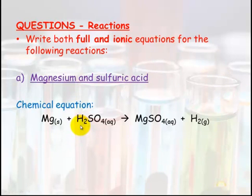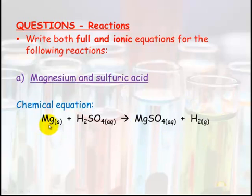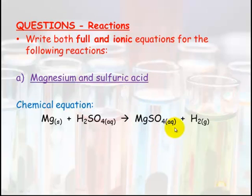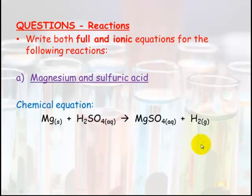Magnesium plus H₂SO₄ — sulfuric acid — will make hydrogen gas plus a salt. What's the salt going to be? Magnesium plus sulfate, so it makes magnesium sulfate. Make sure you check your valences that these balance out, and check your solubility table to know whether this is aqueous or solid. Also make sure you've got your other states written in. Then make sure this is balanced: one magnesium, one magnesium; two hydrogen, two hydrogen; one sulfur, one sulfur; four oxygen, four oxygen. Brilliant.